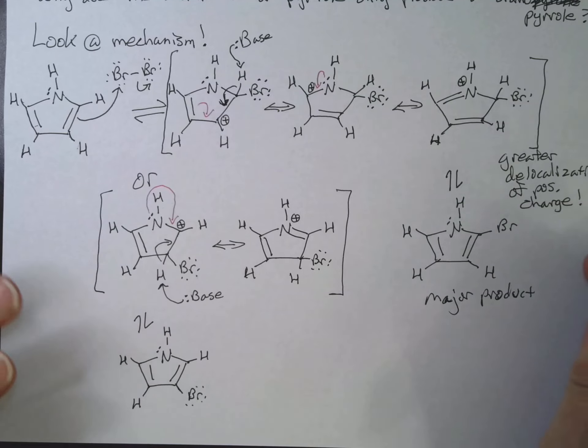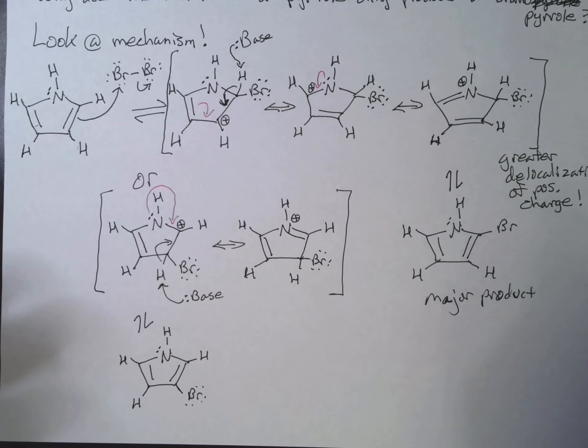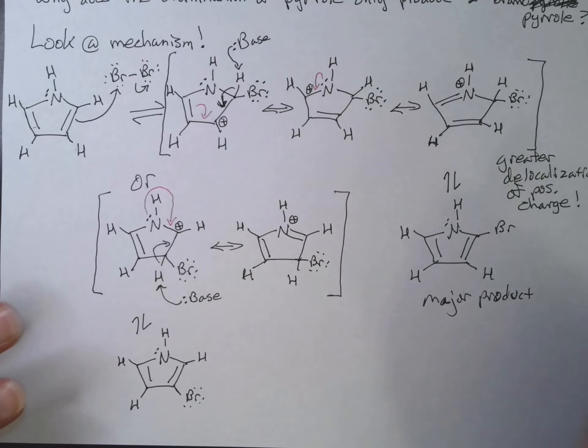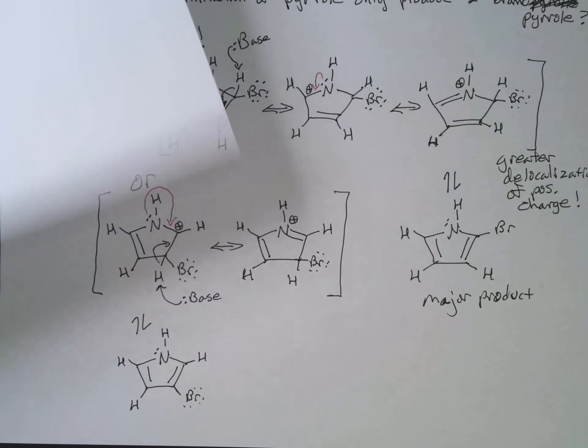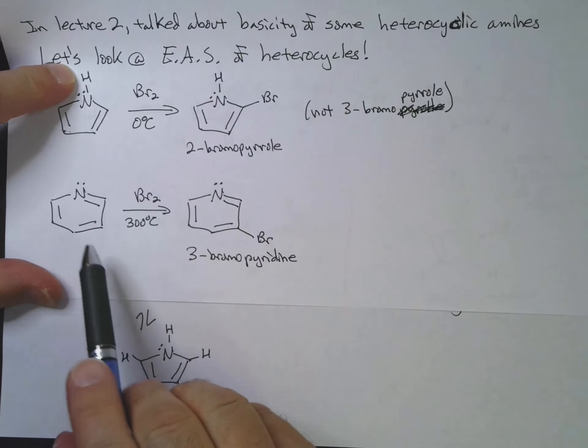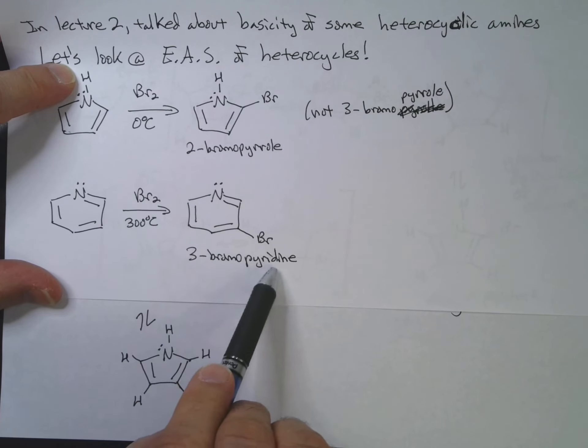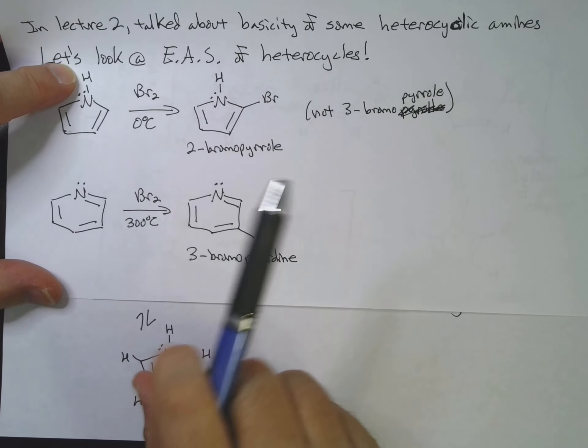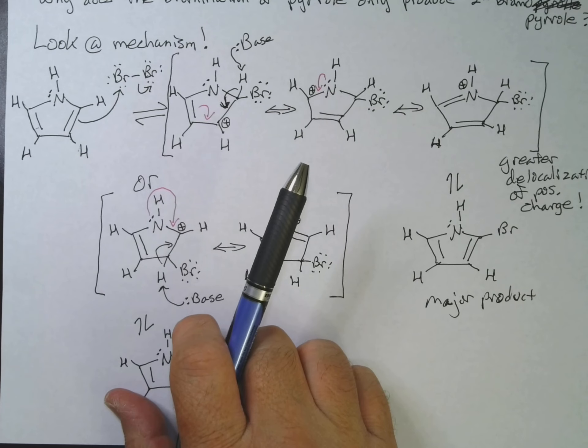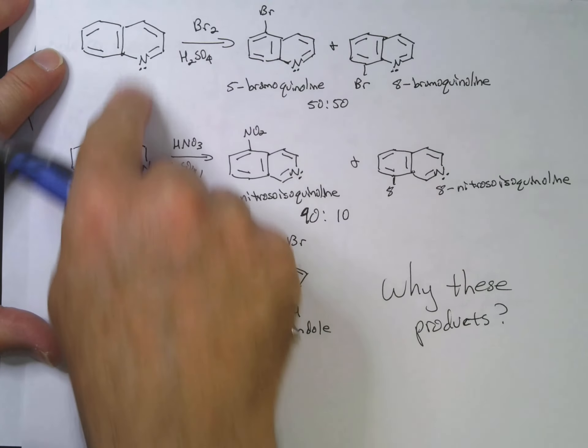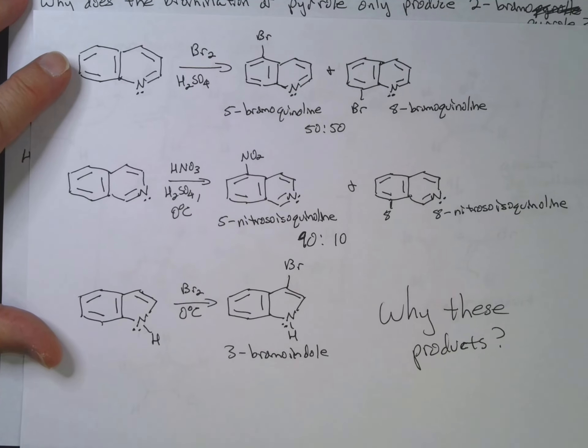So, think back to when we did that kind of analysis with our ortho, para versus meta directing substituents and activating versus deactivating. And be prepared to do it for some of these other reactions. So, a good question on the exam, or on the final might be, draw the intermediates that show how you get three-bromopyridine. Why don't you get two-bromopyridine or four-bromopyridine? Or maybe it'll just be on the quiz.